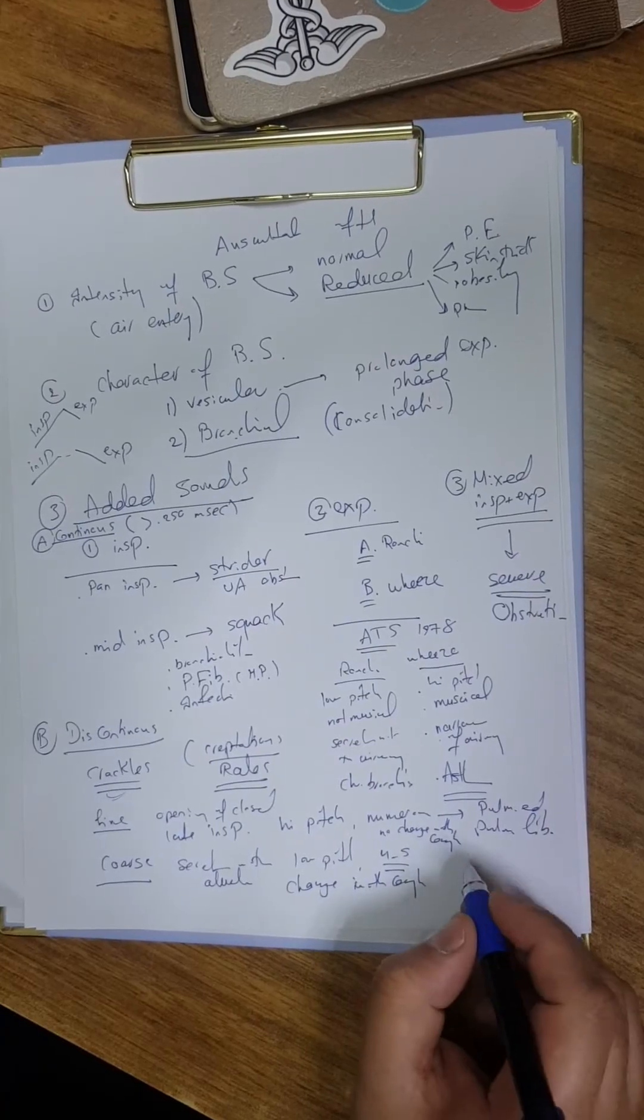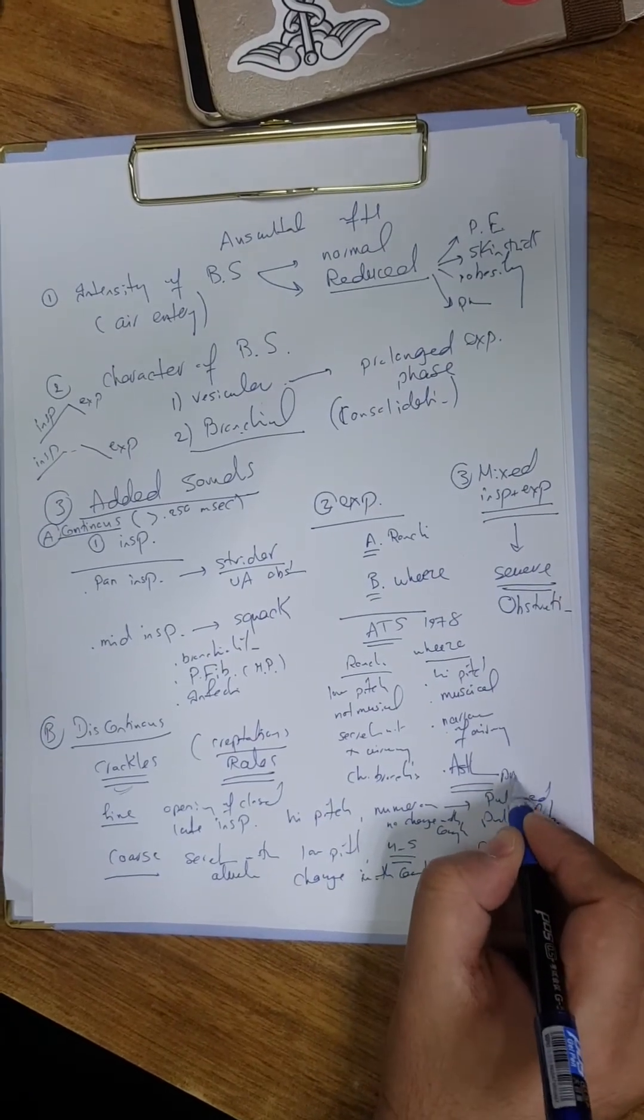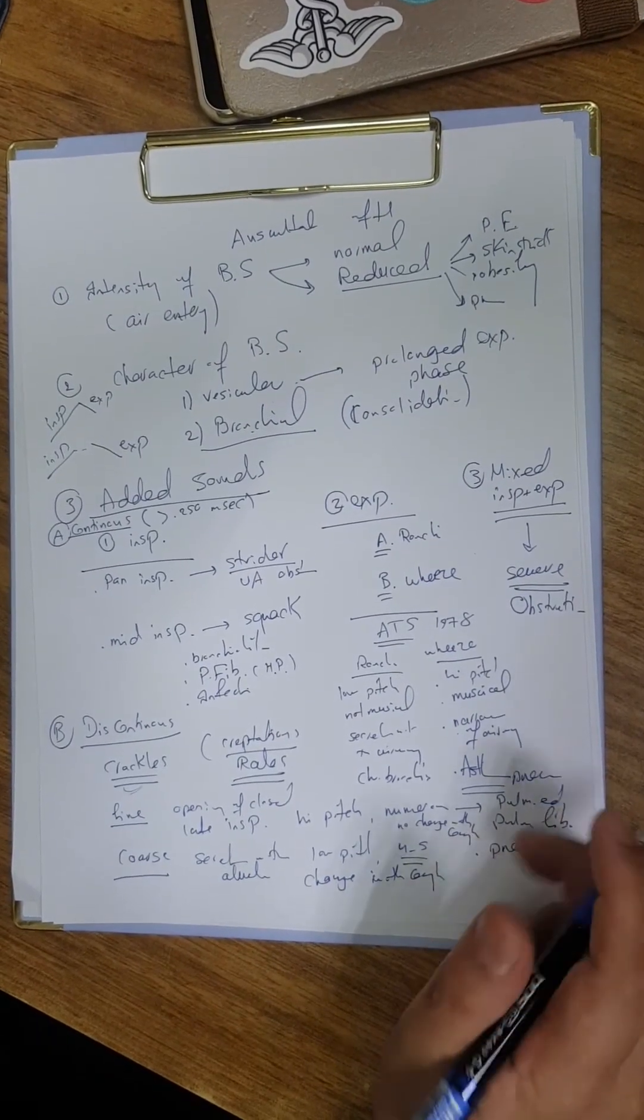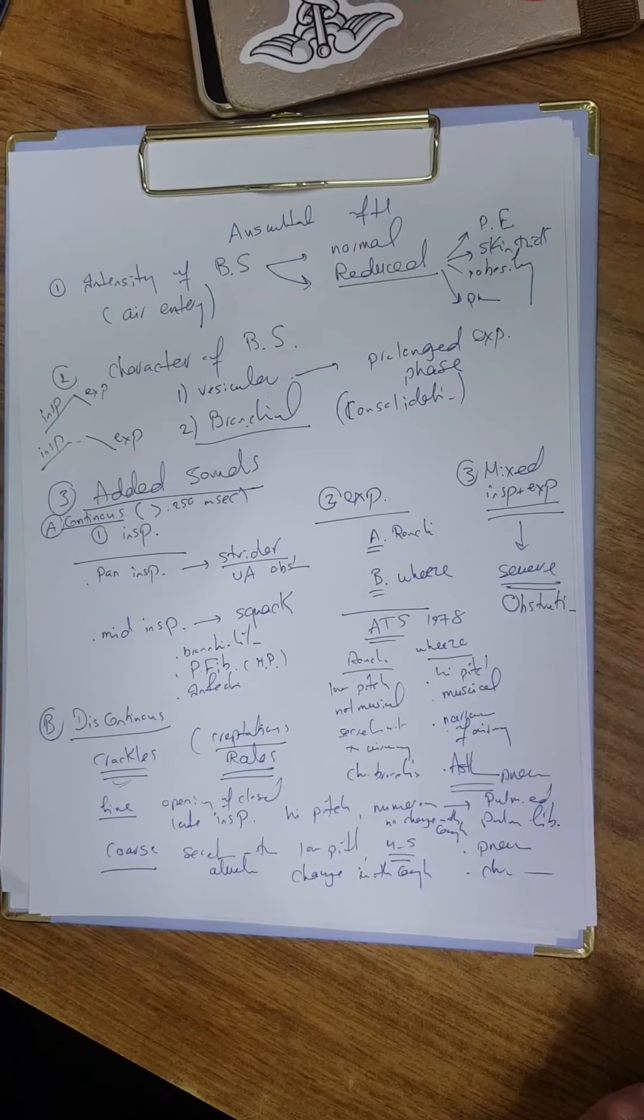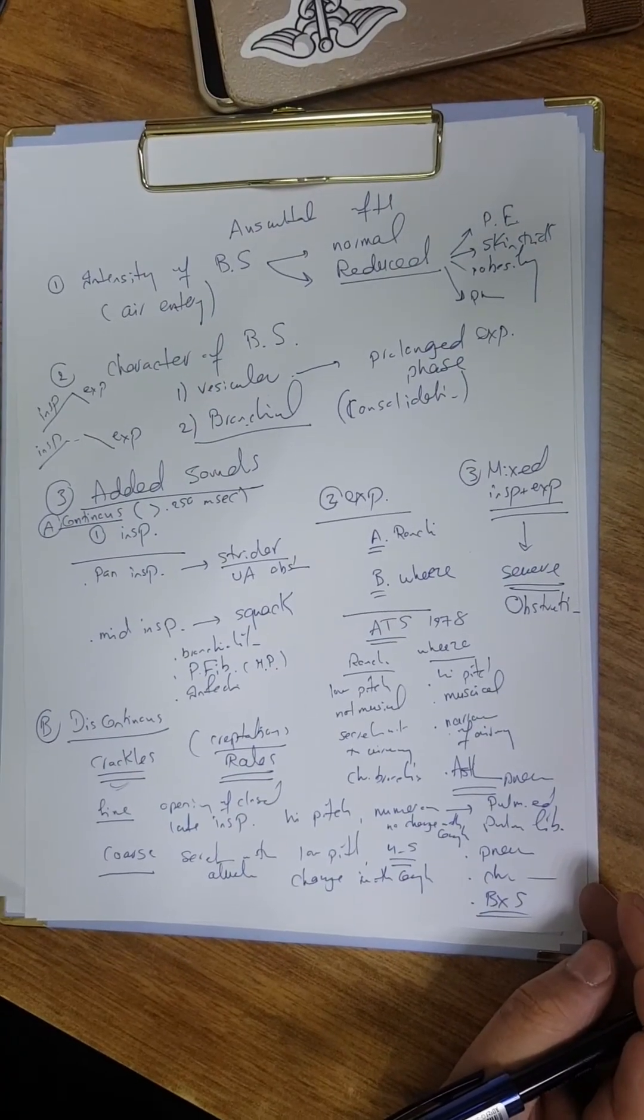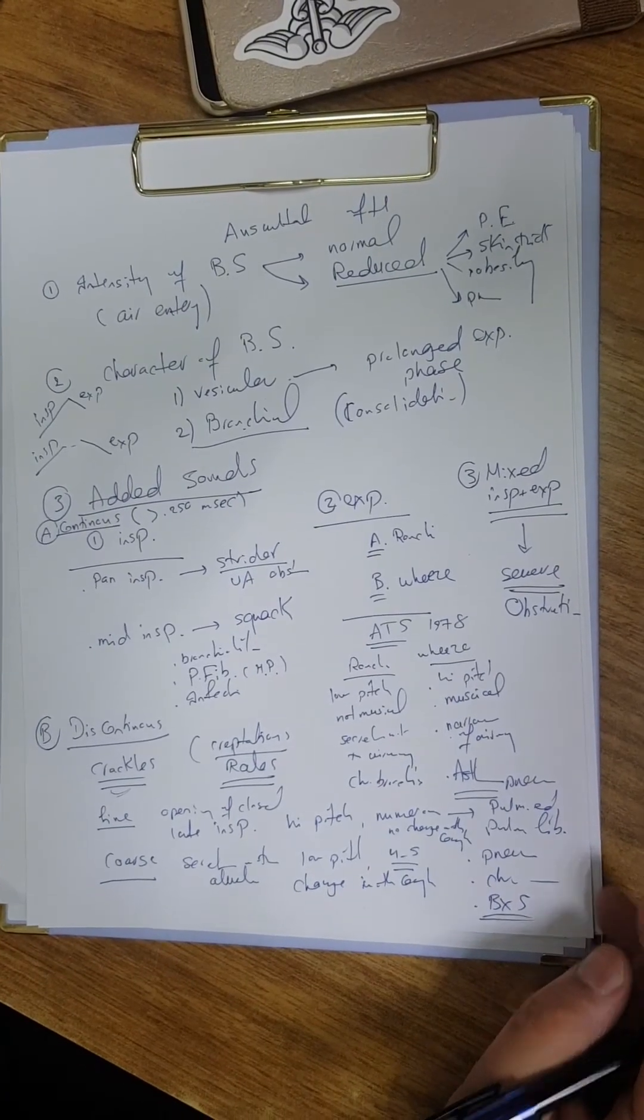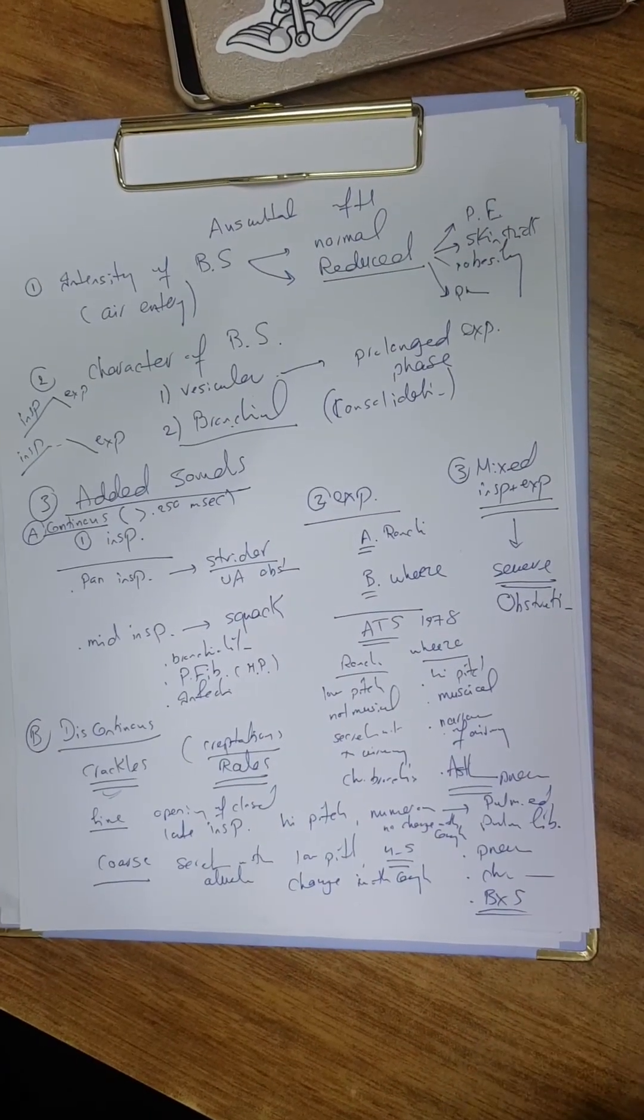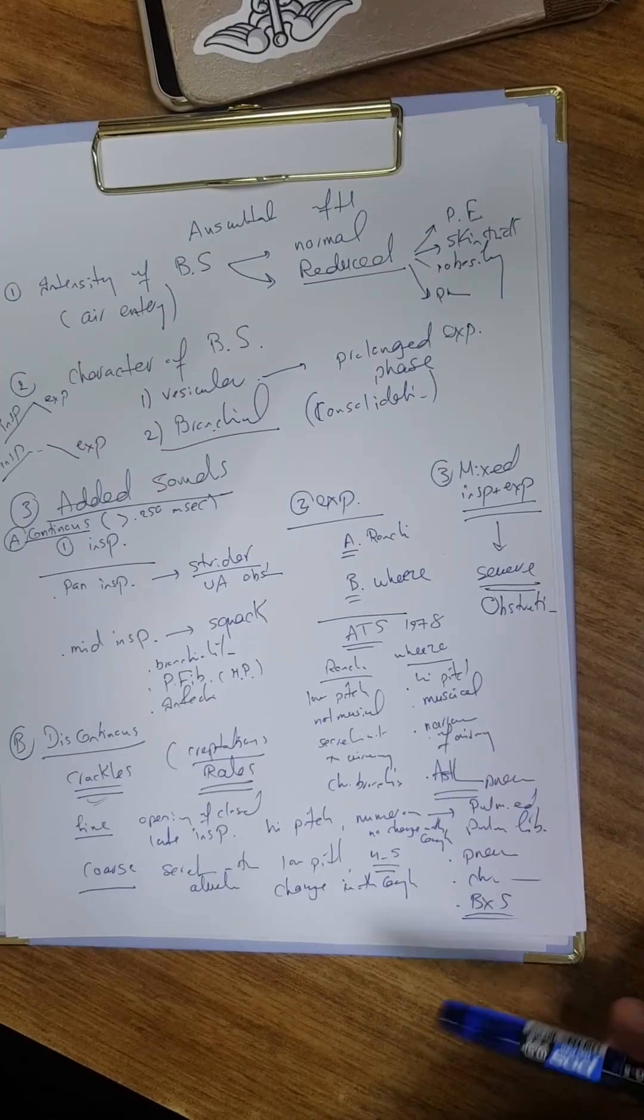One important thing is that in bronchiectasis the cough will change the quality of the crackles. This is the differentiating point between bronchiectasis and pulmonary fibrosis. Both have clubbing, but bronchiectasis is differentiated by auscultation after asking the patient to cough.